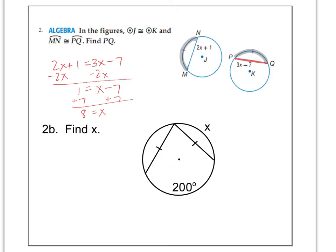Looks like we get X equals 8, but that is not our final answer. We need to take that 8 and plug it into PQ. So I'm going to plug it in right up here. The distance from P to Q is going to be 3 times 8 minus 7, which is 24 minus 7, which is 17.